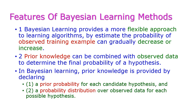Now let us see the features of Bayesian learning methods. Bayesian learning provides a more flexible approach to the learning algorithm, especially for selecting the training examples of a model. Using training examples, we can train our model, and this can be gradually increased or decreased as decided by Bayesian learning. The second feature is that prior knowledge can be combined with observed data.